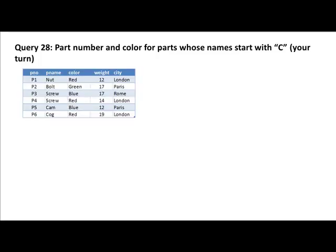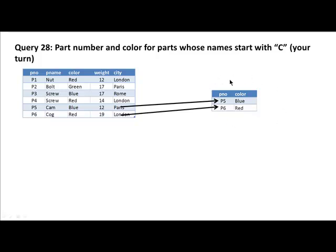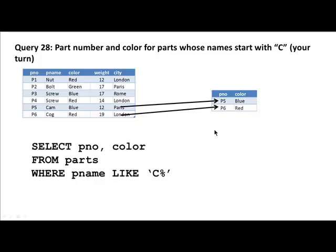We are looking for parts whose names start with an uppercase C — so clearly those are the only two parts: Cam and Cog, and those are the only two things that should appear in our result. Very easy to do this: SELECT part number, color FROM parts WHERE part name LIKE C percent. We are saying C is in the first position followed by any number of other characters, so we use the percent wildcard character.